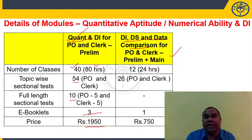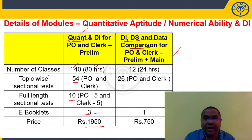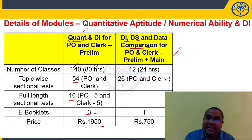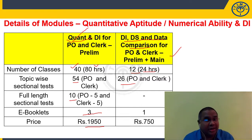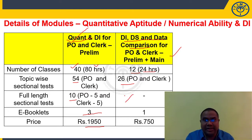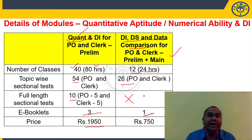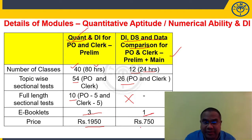If you are looking at only the data interpretation, data sufficiency and data comparison module, we are offering 12 classes with a total duration of 24 hours. You will get 26 topic-wise tests covering line graph, bar graph and pie chart for PO and clerk together. There are no full-length sectional tests in the DI module. You will get one e-booklet as part of this module, and the price is 750 rupees.